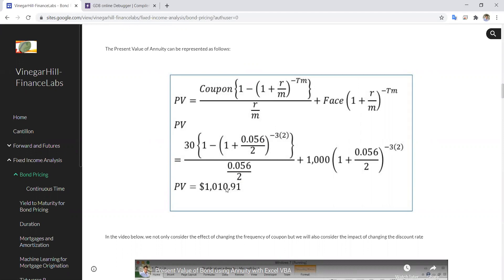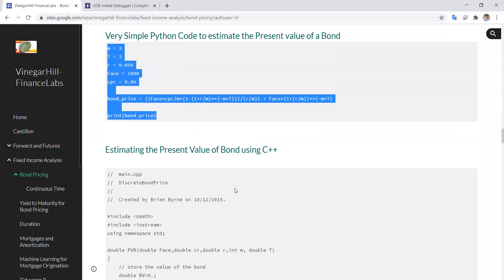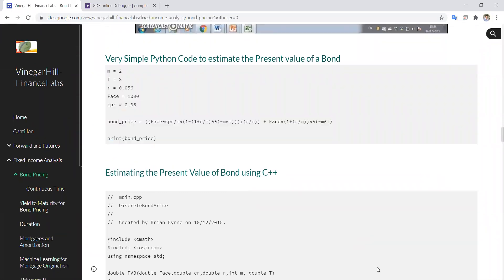We simply change m to be 1 in that instance, so 5.6 divided by 1, and we would have got $1,010.77. So that's that snippet of code - it's quite useful and we can set it out in Python.